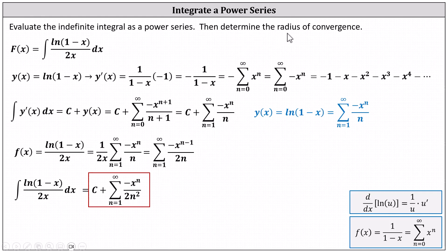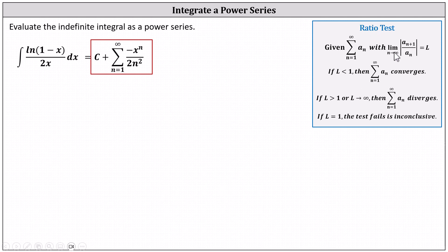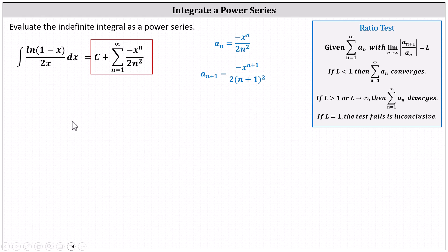Now we need to determine the radius of convergence of the power series, which we'll do on the next slide. We'll apply the ratio test, so we'll determine the limit as n approaches infinity of the absolute value of a sub n plus 1 divided by a sub n, which for the series to converge must be less than 1. a sub n is the given formula. a sub n plus 1 is the opposite of x to the power of n plus 1 divided by the product of 2 and the square of n plus 1. Now we set up the limit and write this quotient as a product by multiplying by the reciprocal of a sub n.